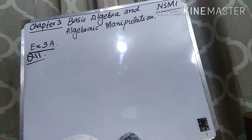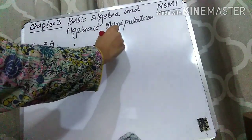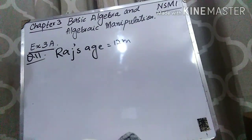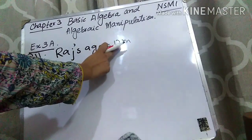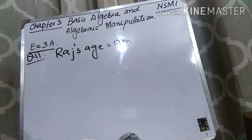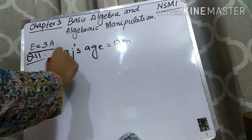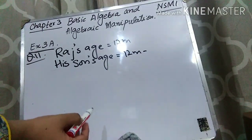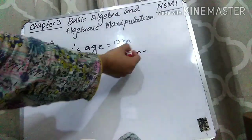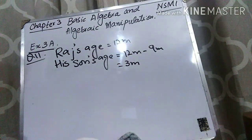First I will write their present ages. Raj's age is 12m years old — it's given. Now, his son was born when Raj was 9m years old, meaning when Raj was 9, his son was born. Now Raj is 12m, so we subtract 9m from his present age to get his son's age. His son's age is 12m minus 9m, which equals 3m years old.